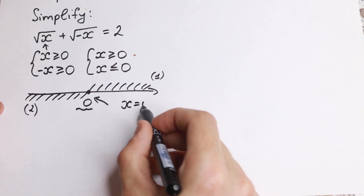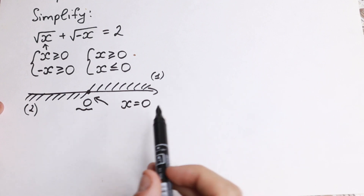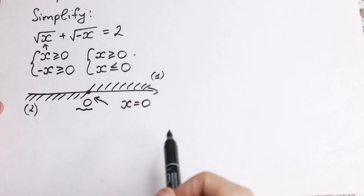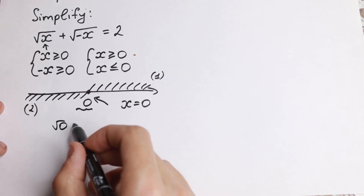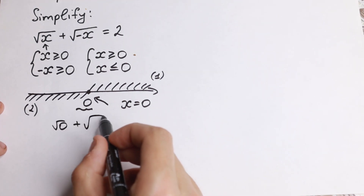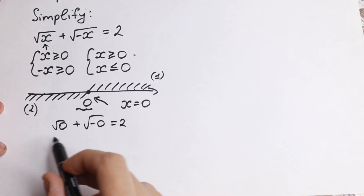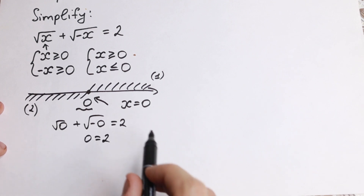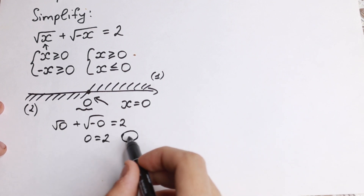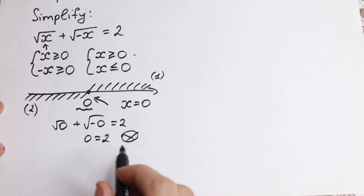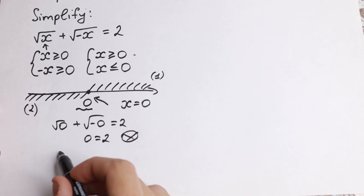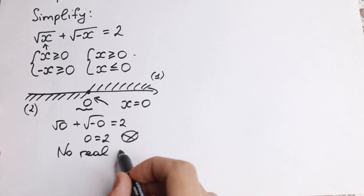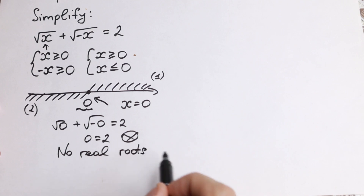Of course we need to check it in the original equation. Square root of 0 plus square root of minus 0 equals 2 gives us 0 + 0 = 2, which is incorrect. So as you can see, there are no real solutions — no real roots here.